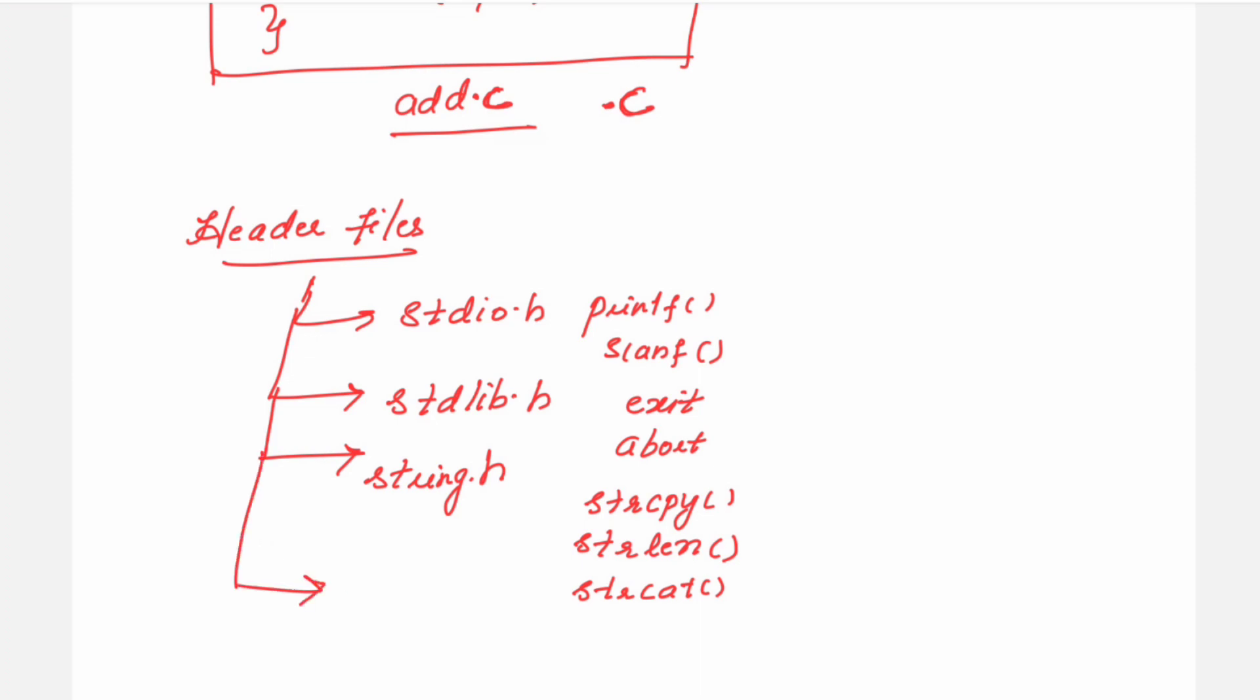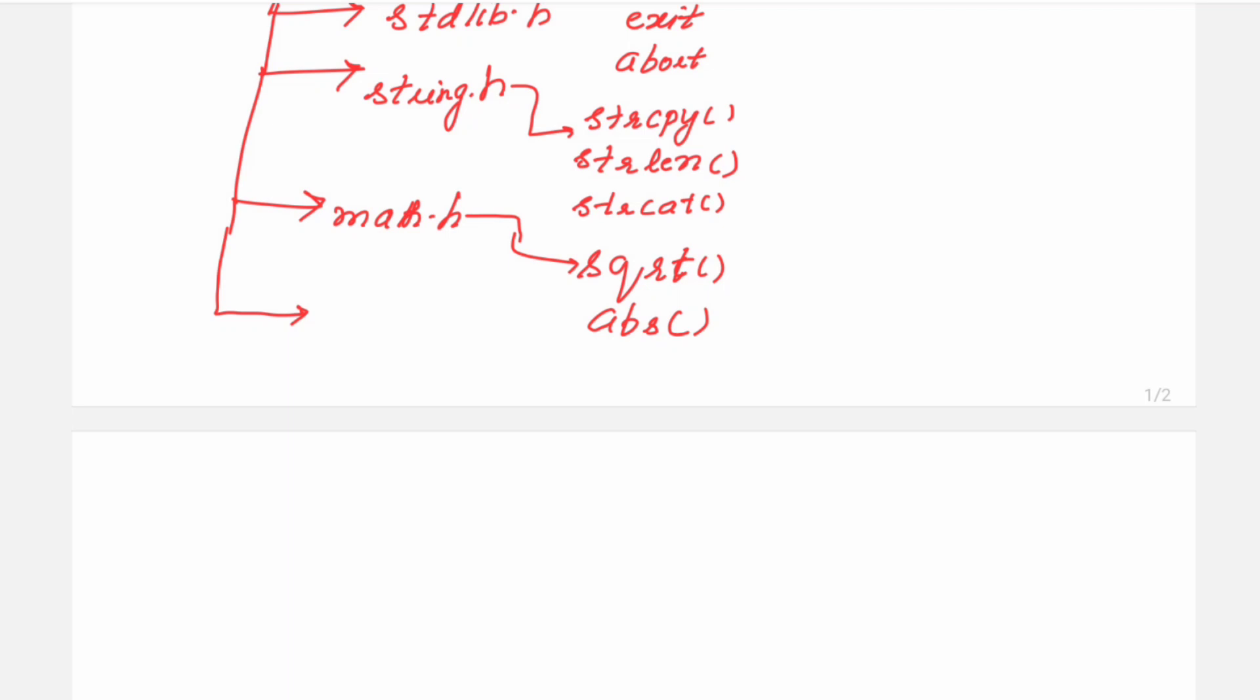The different string manipulation functions can be done if you are including in your source program string.h. Then you have math.h mainly used to perform the mathematical functions. So here, suppose any point of time if you want to get the square root of a number, then you are using sqrt as the function. If you want to make the absolute value return for an integer, then you have to make use of abs.